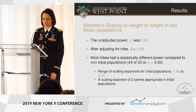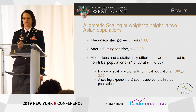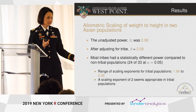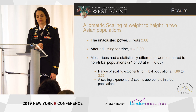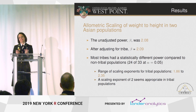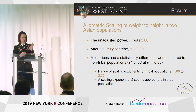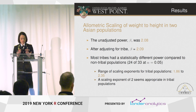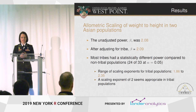What's the takeaway? The unadjusted power beta in the first model was 2.08 — very close to 2 — so BMI appears to be a pretty good assessment of the relationship between height and weight even in Asian Indians. After adjusting for tribe, our beta was 2.09. Of the 33 tribes in our data, 24 had statistically different coefficients, ranging from about 1.86 to 2.35. But the obesity researchers we work with said these are close enough to consider it a 2 — so for practical purposes, BMI seems to do an okay job even in all of these tribes.